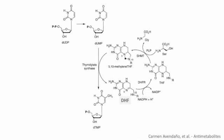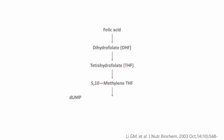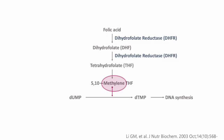DHF, THF, and 5-methylene tetrahydrofolate — in a process facilitated by thymidylate synthase, 5-methylene tetrahydrofolate transfers a methyl group to deoxyuridine monophosphate (dUMP), converting it to deoxythymidine monophosphate (dTMP). Folate donates a methyl group to dUMP, facilitating the synthesis of dTMP. Dihydrofolate reductase (DHFR) catalyses the conversion of dihydrofolate to tetrahydrofolate.